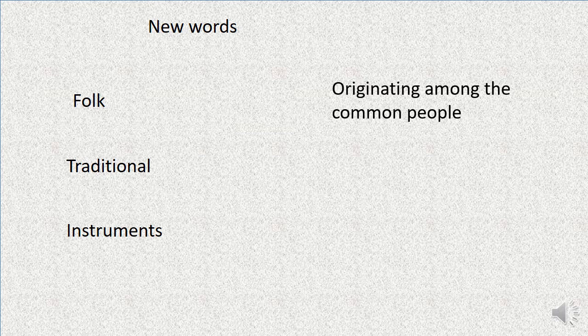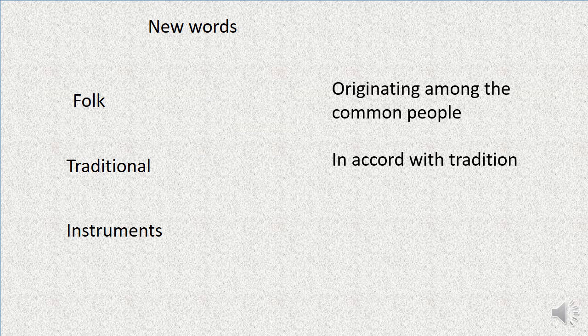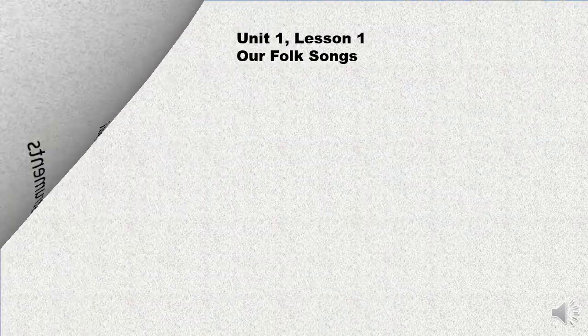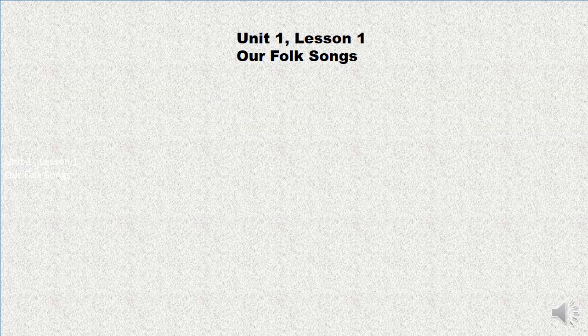The word 'traditional' is an adjective and it means in accord with tradition. The next word is 'instrument' — instrument is a noun and it means a device made for a special purpose. Now we are ready to read the passage.